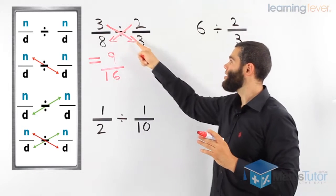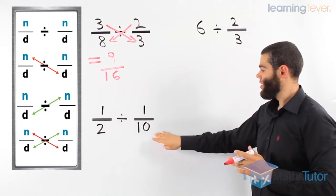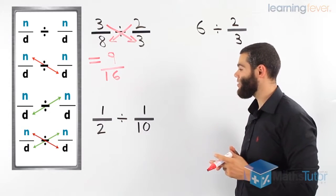So we cross-multiply, and then we cross-multiply again. Let's do this one. A half divided by a tenth.